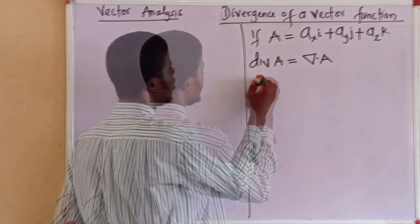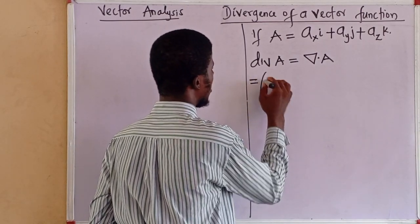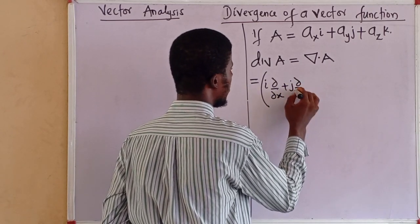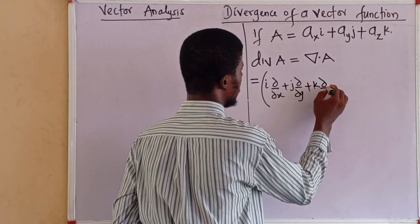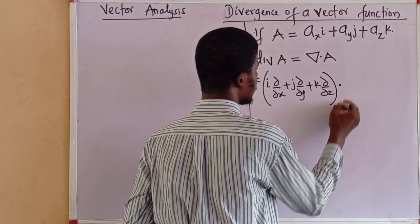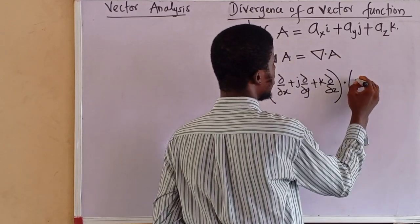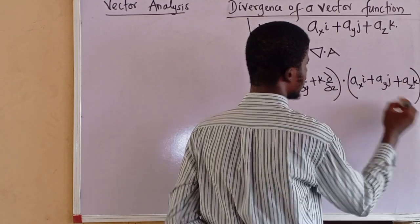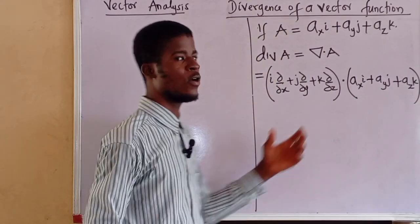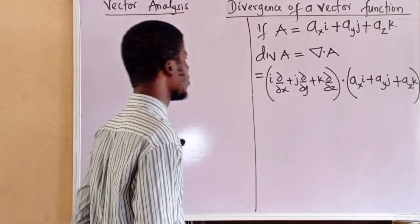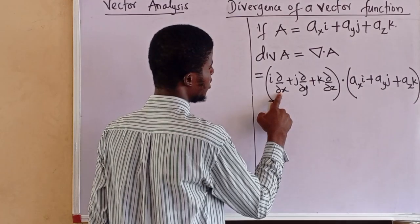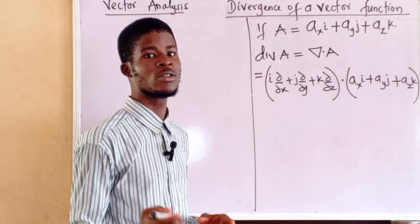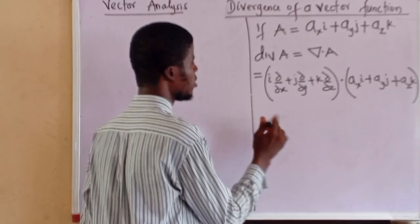This operation is equal to i times partial/∂x plus j times partial/∂y plus k times partial/∂z, dot the vector itself: Ax·i plus Ay·j plus Az·k. This operation involves dot products. We are considering ∂/∂x, ∂/∂y, and ∂/∂z as operators, not multipliers.